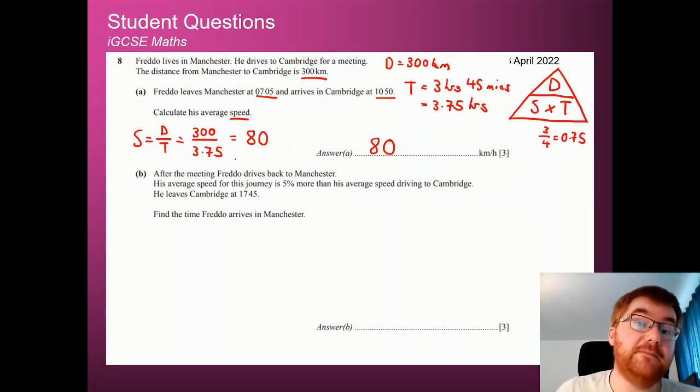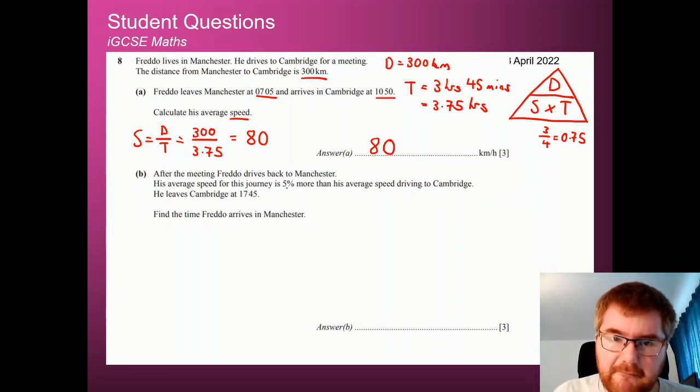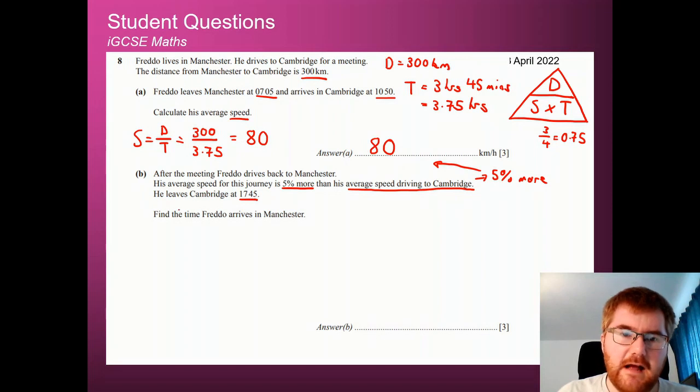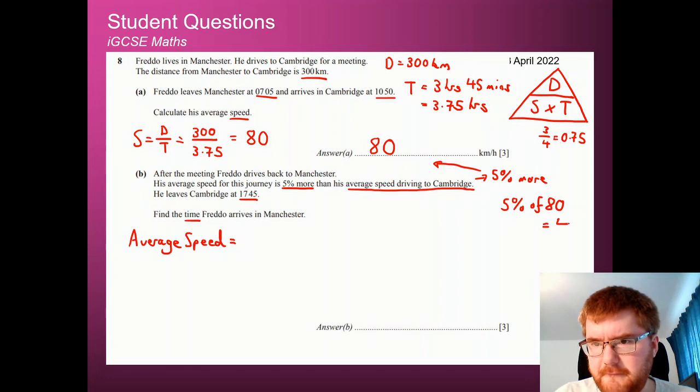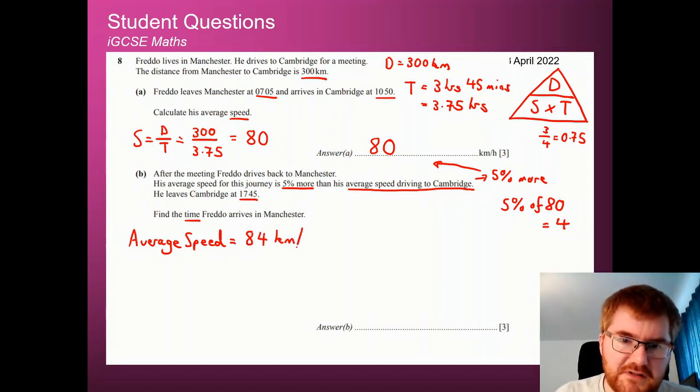Now for part B, after the meeting, Freddo decides to go back to Manchester. And his average speed for this journey is 5% more than the average speed driving to Cambridge. So what this means is 5% more than the answer we just worked out here. He leaves Cambridge at 17:45, and we want to work out the time that's important when we use the formula triangle, Freddo arrives in Manchester. So first of all, we need to work out the new average speed. So we need to add on 5% of 80 onto the original answer. Well, 5% of 80, well, that's going to be equal to 4. 10% is 8, and then to find 5%, we divide by 2. That gives us 4. So the new average speed is going to be equal to 84 km per hour, pretty fast.